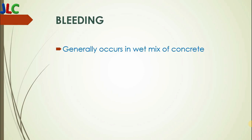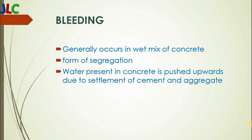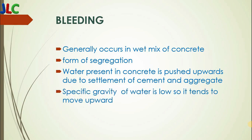Now, bleeding. Generally, it occurs in a wet mix of concrete. It is also a form of segregation. Water present in concrete is pushed upward due to the settlement of cement and aggregate, and bleeding occurs. The specific gravity of water is low, so it tends to move upward.